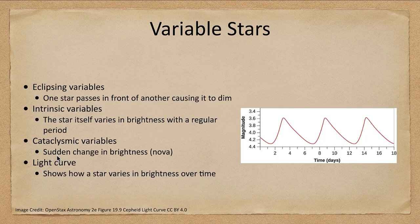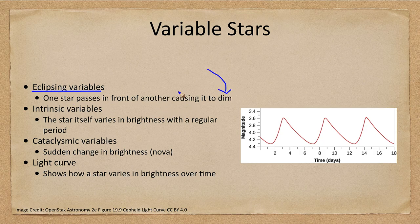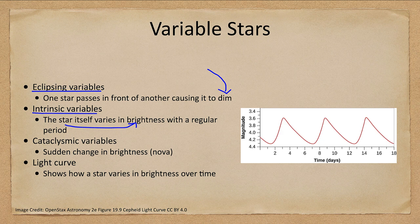So what is a variable star? We have different types of them, and some of them are more helpful for distances than others. We have, for example, eclipsing variables where one star passes in front of another, which causes it to dim and changes the brightness. We also have intrinsic variables where a star all by itself varies in brightness with a regular period — it will get brighter and it will get fainter. And we have cataclysmic variables where there is a sudden change in brightness.